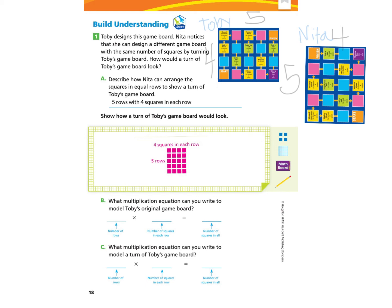Now we're ready to look at parts B and C. Part B: what multiplication equation can you write to model Toby's original game board? Part C: what multiplication equation can you write to model a turn of Toby's game board — which is the one Nita created? For Toby's board, we had four rows and five squares in each row, so the product is 20. For Nita's model, there were five rows with four squares in each row, and the product is also 20. Great job.